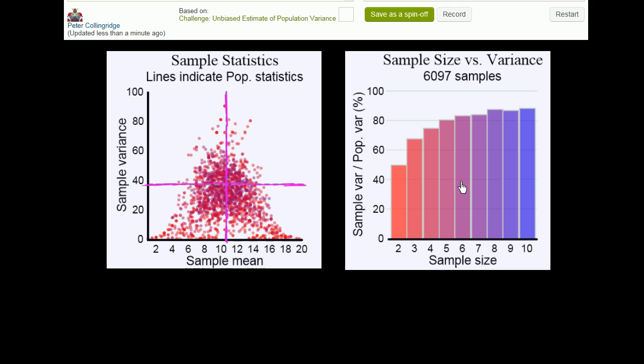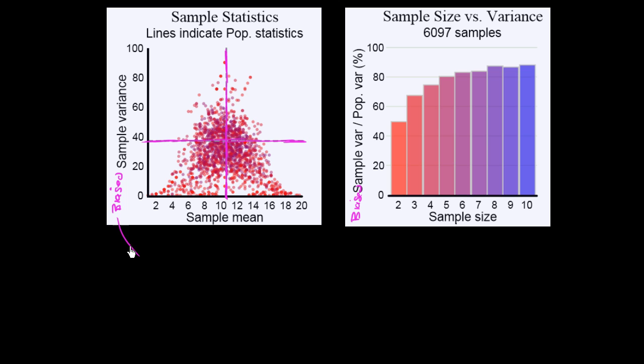So this first chart on the bottom left tells us a couple of interesting things. And just to be clear, this is the biased sample variance that he's calculating. This is the biased sample variance. So he's calculating it.